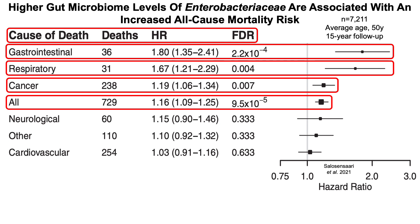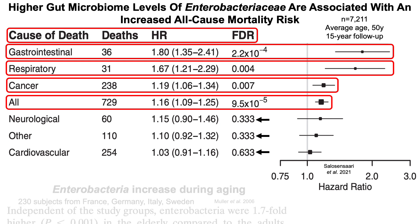Interestingly, and suggestive of a gut-lung axis, higher gut levels of enterobacteria were associated with an increased risk of death from respiratory-related issues, more specifically pneumonia and viral infection — and there's a link to a related video in the corner. Outcomes that were not associated with all-cause mortality risk in terms of enterobacteria levels were cardiovascular deaths, neurological deaths, and other.